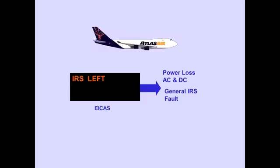The EICAS advisory message, IRS left, center, or right, is displayed when an IRS fault is detected. Loss of AC and DC power is one such fault condition.